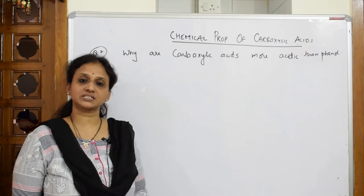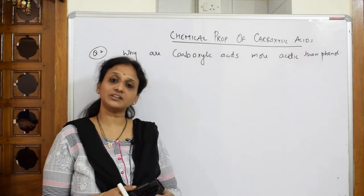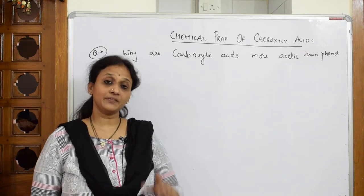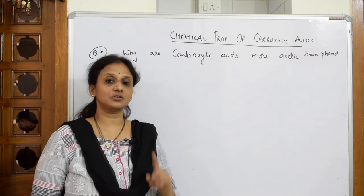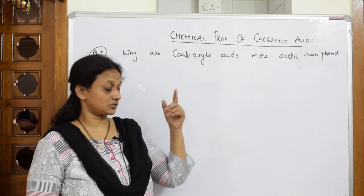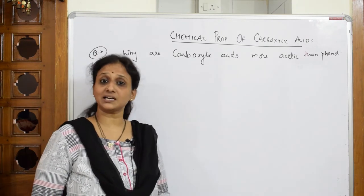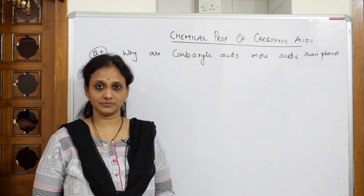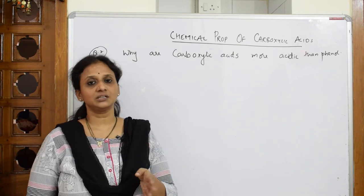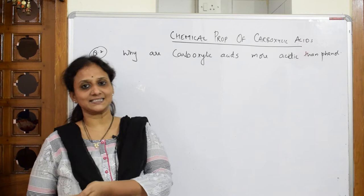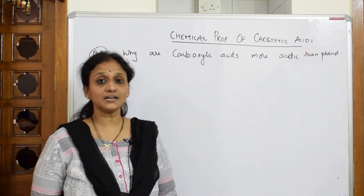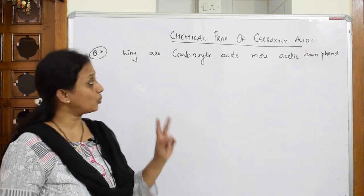Let us come back and do the next question. We've already written one order in acidity: carboxylic acids are more acidic than phenol. First comes alcohol, then comes water, then comes phenols, and then comes acids. The strongest is a mineral acid. So now I have to prove why carboxylic acids are more acidic than phenol.